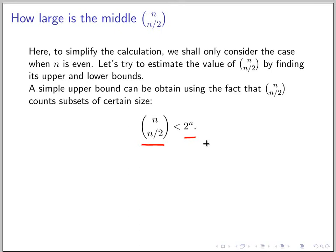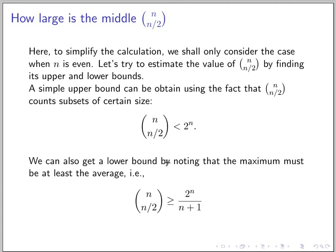For the lower bounds, we can obtain the lower bounds in the same way. We can note that the sum of all the size of the subset is 2 to the n. But then there are n plus 1 possible sizes of the subset from the subset of size 0, 1, up to of size n. So the average is 2 to the n over n plus 1. But the maximum has to be at least the average.